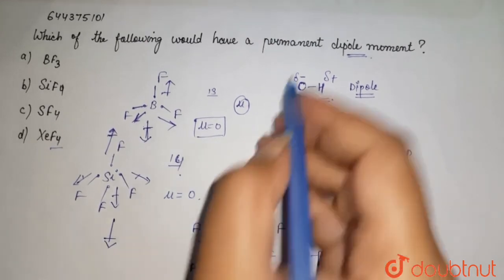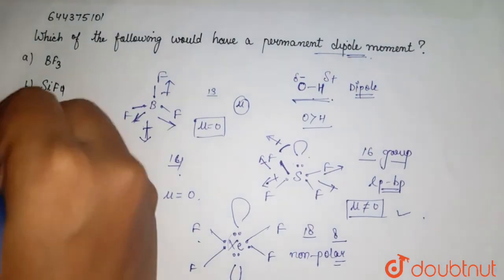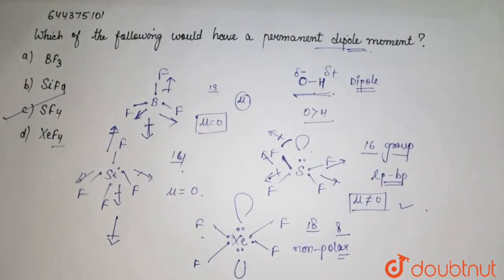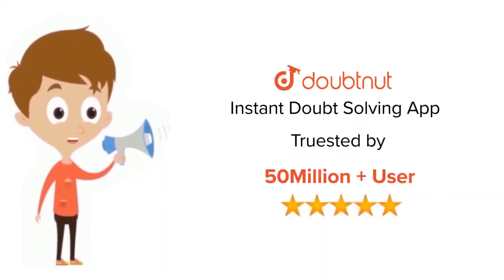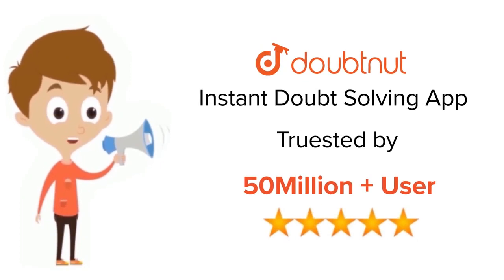So we get to know which has the permanent dipole, that is SF4. According to that, your C option will be the right answer. For class 6 to 12th, IIT-JEE and NEET level, trusted by more than 5 crore students, download Doubtnet app today.